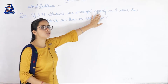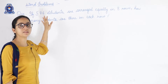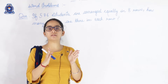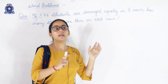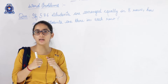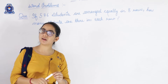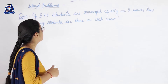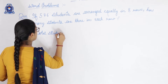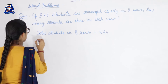Our next question: if five hundred seventy-six students are arranged equally in eight rows, how many students are there in each row? Total students are five hundred seventy-six, arranged in eight rows. We have to find out how many students are in one row. The value of more than one is given; we need to find the value of one, so we do division. We write: total students in eight rows is five hundred seventy-six.